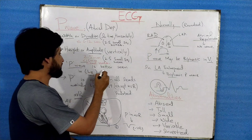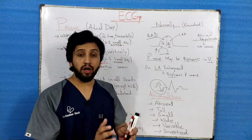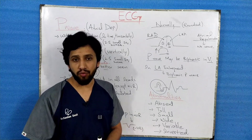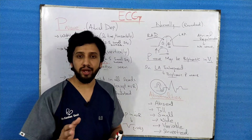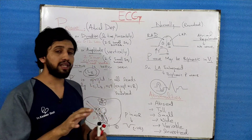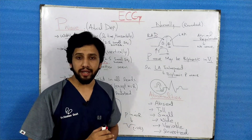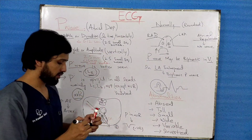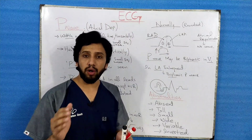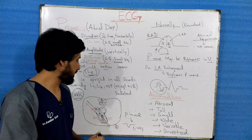The P wave is better seen in Lead II. This is because the impulses are moving towards Lead II, and whenever an impulse moves toward a lead, the deflection is positive and is better seen. Conversely, whenever the impulse travels away from an electrode or lead, the deflection will be negative, as seen in aVR.